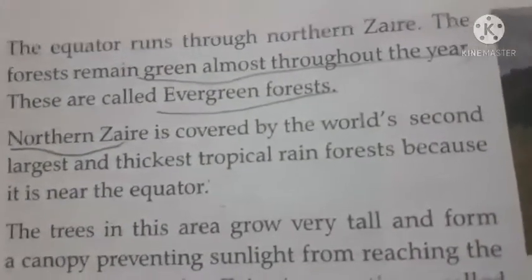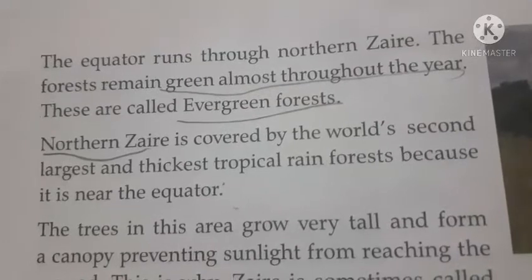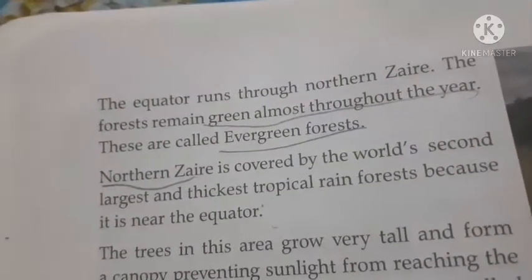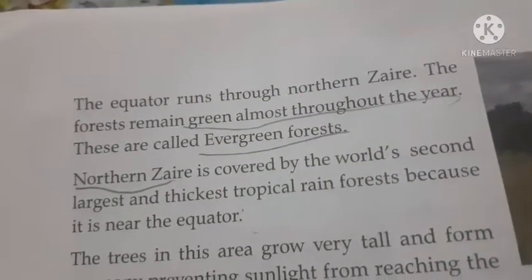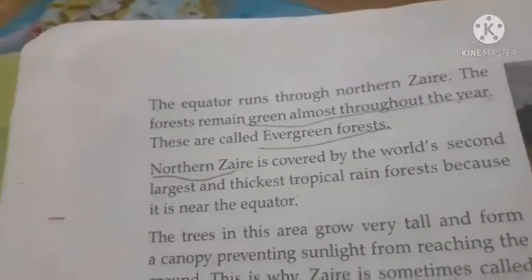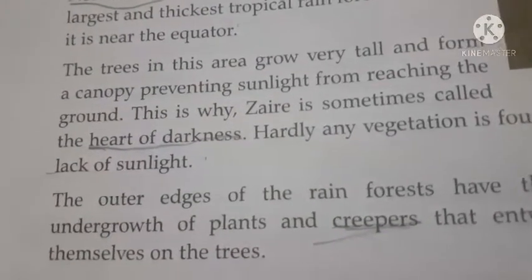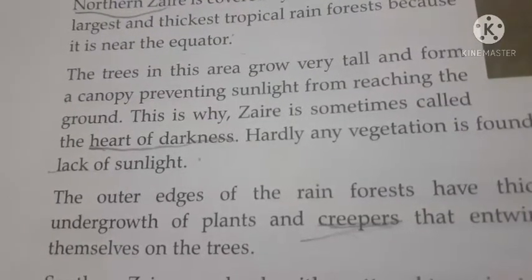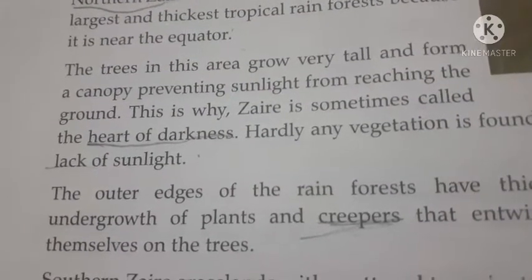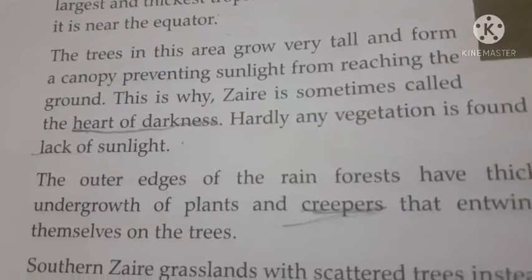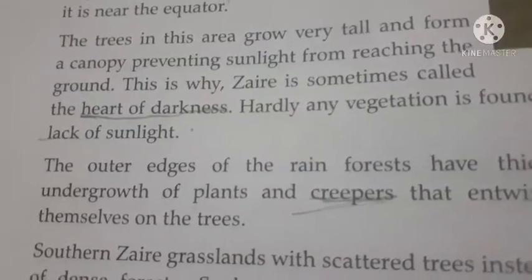Northern Zaire is covered with the world's second largest and thickest tropical rainforest, because of its proximity to the equator. The trees in this area grow very tall and form a canopy, preventing sunlight from reaching the ground. Due to this, Zaire is sometimes called the Heart of Darkness.